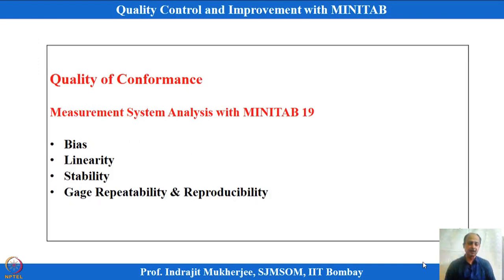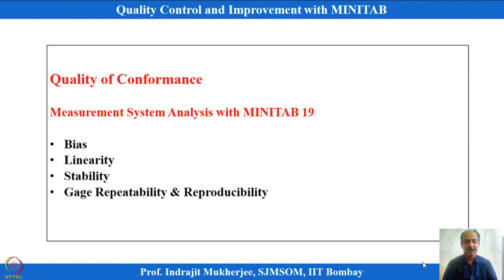We will also discuss measurement system analysis, which is an important part because if the instrument measuring dimensions is not correct, all the analysis, interpretation, and conclusions will be wrong. We will study measurement system bias, linearity, stability, and gauge repeatability and reproducibility — the variability aspects of the gauge. We will understand the industry standards for determining whether an instrument is measuring correctly or needs to be replaced.